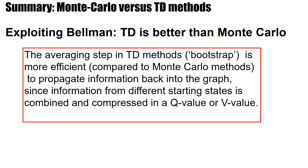To sum up: temporal difference methods are better than Monte Carlo. The trick is that the averaging step in TD methods — the bootstrap idea — is more efficient at propagating information back into the graph far from terminal states, since information from different starting states is combined and compressed into a Q-value for each state-action pair or a V-value for each state.